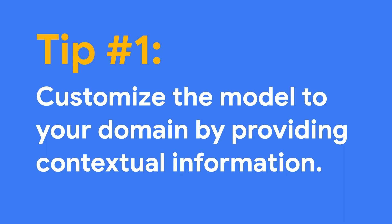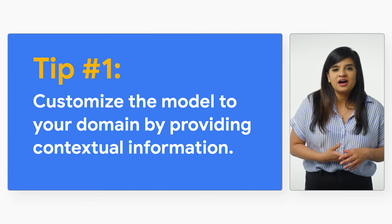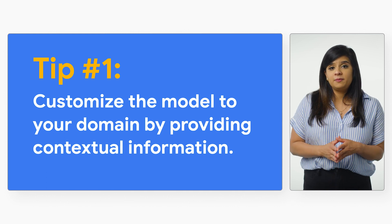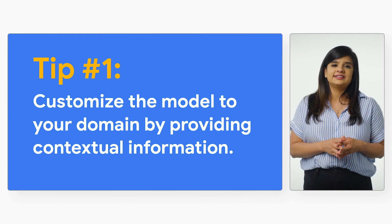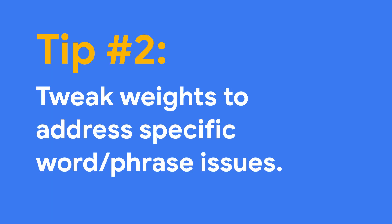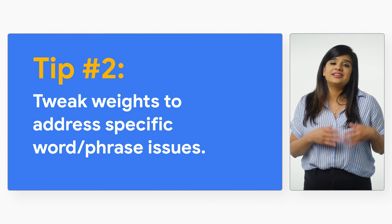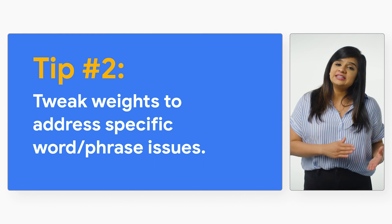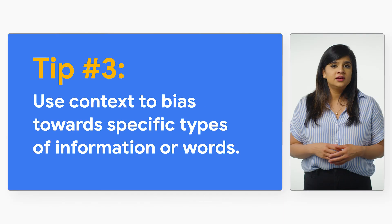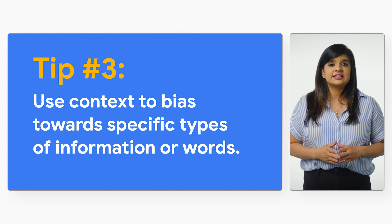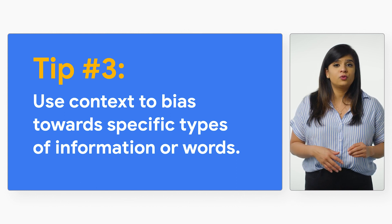The ground truth is the correct answer as defined by us. When we're doing this at scale, there could be several imperfections in our transcription, which is why we have some handy tips and tools to help you improve accuracy. You can customize the model to your domain by providing contextual information — for example, if you're creating a bot that allows people to order pizza, you might want to increase the probability that words like pepperoni, olives, and mozzarella are recognized. You can also tweak the weights to address specific word or phrase issues — for rare words, proper nouns, or even made-up words, biasing towards them can fix individual terms. Finally, you can use context bias towards specific types of information, such as biasing towards alphanumeric entries in an IVR telephone system after asking for an order number.